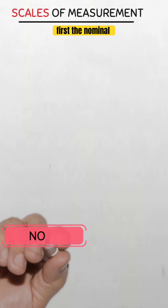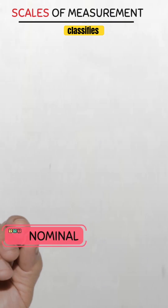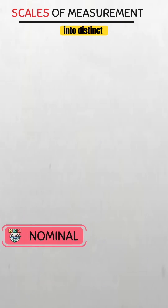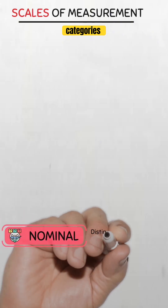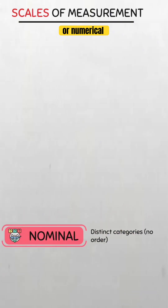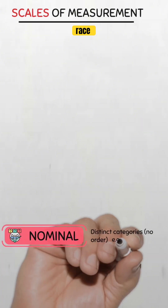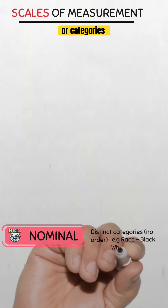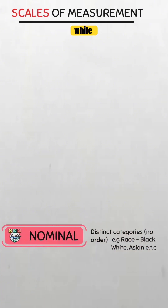First, the nominal scale. This scale classifies data into distinct categories with no inherent order or numerical value. For example, race — with categories such as black, white, Asian, etc. These are labels, not ranked values.